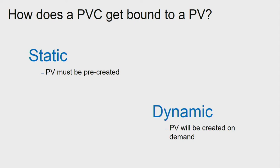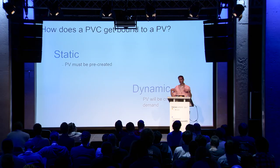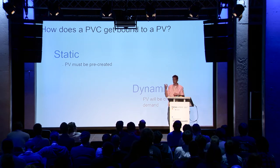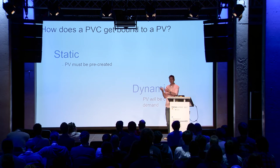How does a claim get matched to the actual persistent volume? Similar to how the Kubernetes scheduler looks for available nodes and does bin-packing to find the best place for a pod, the same thing happens with a persistent volume — Kubernetes looks for an appropriate persistent volume to satisfy the claim.